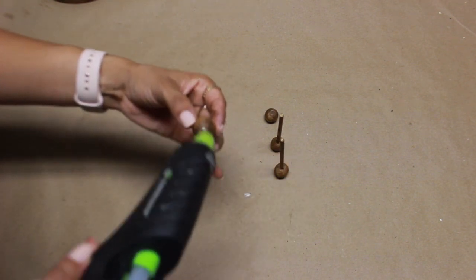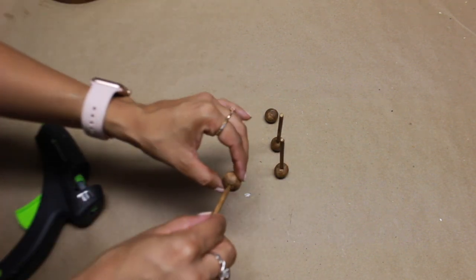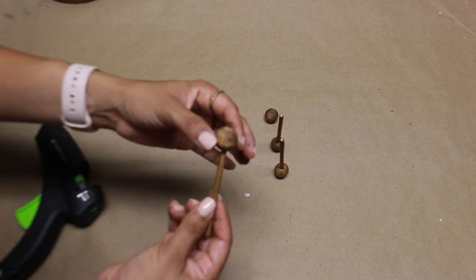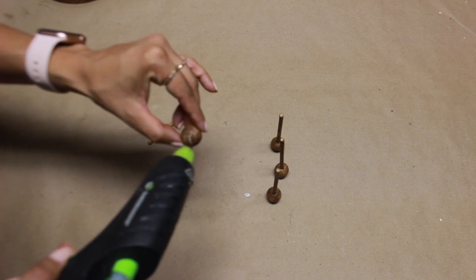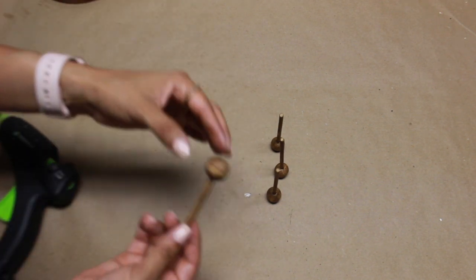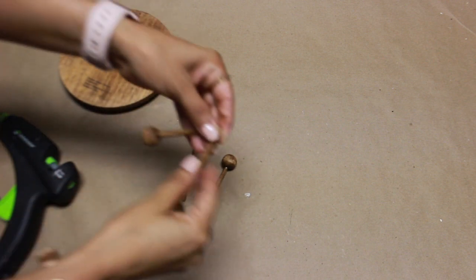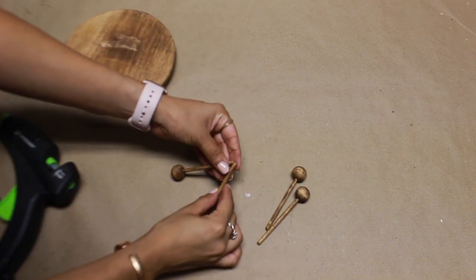Pointy part of the skewer is able to push all the way through to the opposite side. But don't let it go all the way through. Now we're just going to hot glue the two ends together.